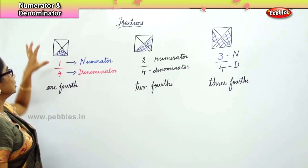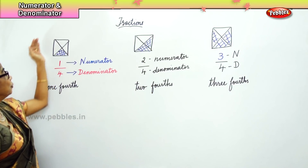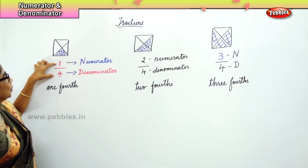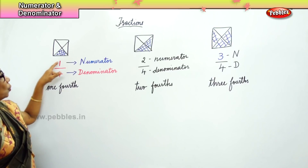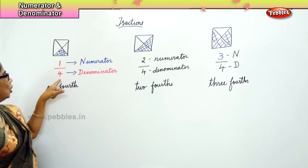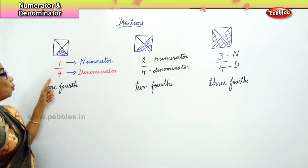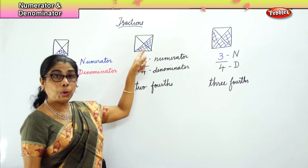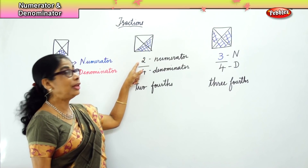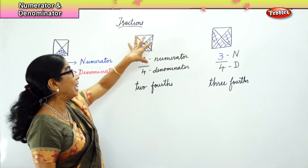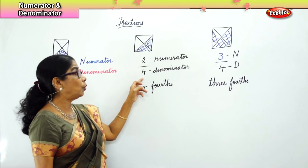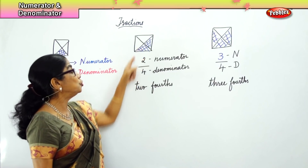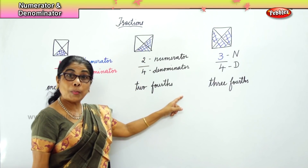Now, fractions recap: we have divided this into 4 parts and shaded 1 part, so we call it 1 by 4 — 1 is the numerator and 4 is the denominator, and we call it 1 fourth. In the next one, we have shaded 2 portions, so the numerator is 2 and 4 is the denominator, and we write it as 2 fourths — 2 parts out of 4.